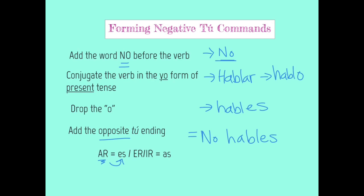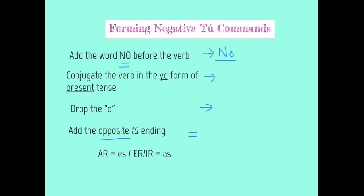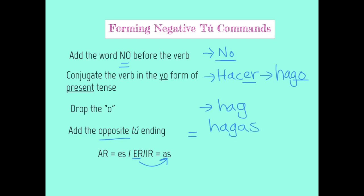You're probably asking why we don't just start with the stem. The reason we go with the present tense yo form is to account for any irregular spellings we might need. For example, let's work with the verb hacer, an ER verb. The yo form of hacer in the present tense is hago — it's a go verb. Drop the o, then add the opposite ending. Since hacer is an ER verb, I add AS on the end to make hago → hagas. The whole thing — no hagas la tarea en clase, por favor — means don't do your homework in class, please.